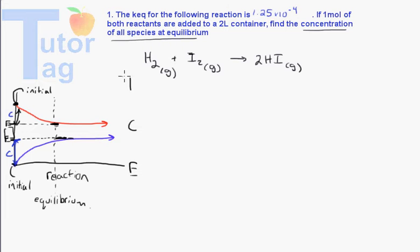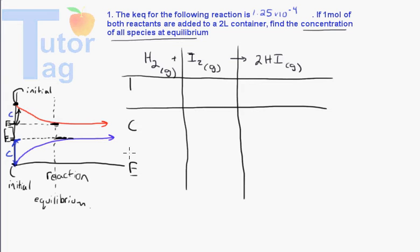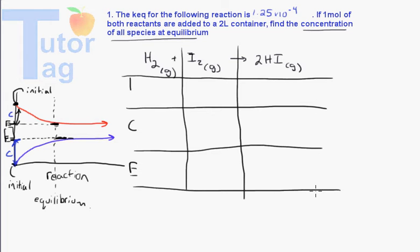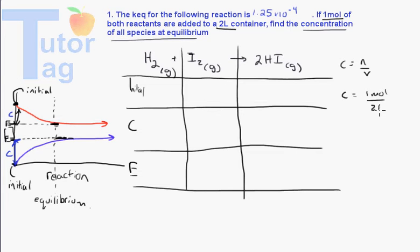We set up the ICE table with I, C, E rows, and each of the reactants and each of the products have their own column. I stands for initial. The question says one mole of both reactants are added to the 2-liter container. Concentration is moles divided by volume, so that's 1 mol / 2 L = 0.5 mol/L. So the initial concentration of both reactants is 0.5 mol/L. For HI, it started at nothing — zero moles per liter.